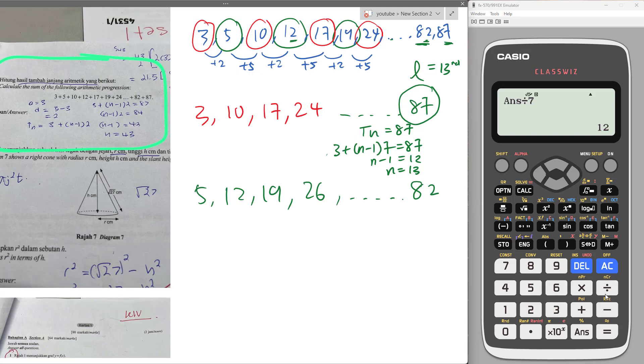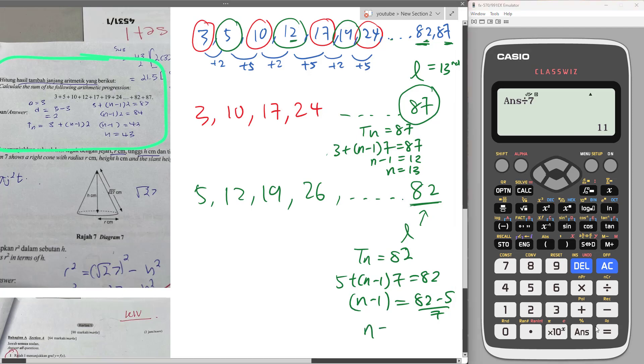Okay, then I will do the same thing for 82. I want to know what is the last term for the second progression. So I will do tn equals 82. So a plus n minus 1, d is 7 also, equals 82. Then n minus 1 equals 82 minus 5 divided by 7. So 82 minus 5 divide by 7, I got 11. So n equals 12. So the last term for this one is the 12th term.